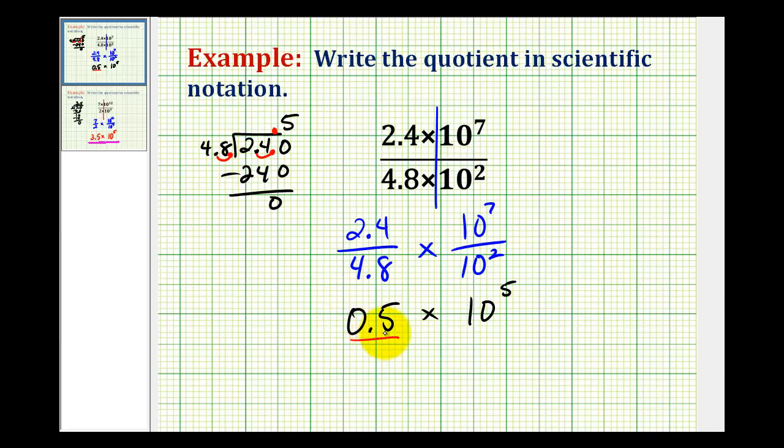So what we'll do is write zero point five in scientific notation and then multiply it by ten to the fifth. Here we have to move the decimal to the right one place, giving us five times ten to the negative one. And then we have to multiply this by ten to the fifth.